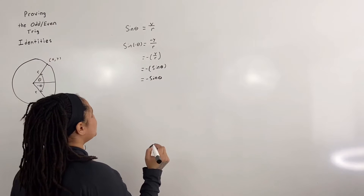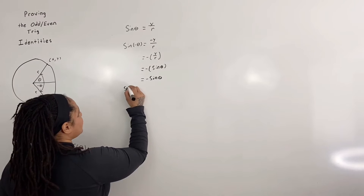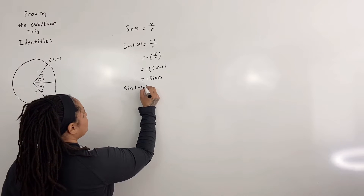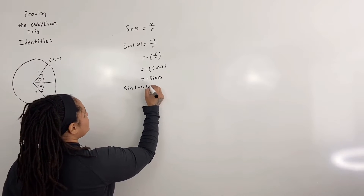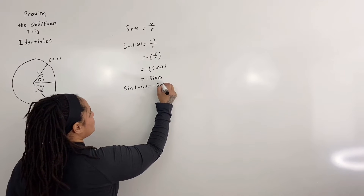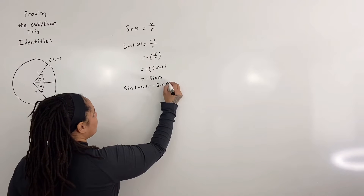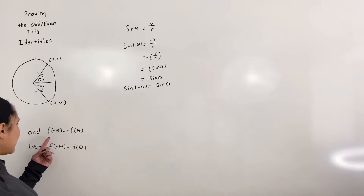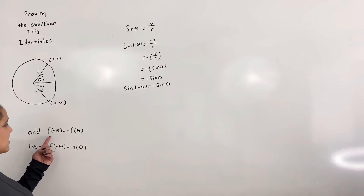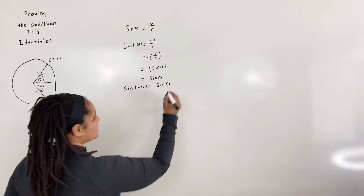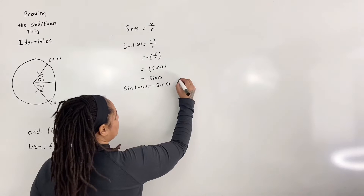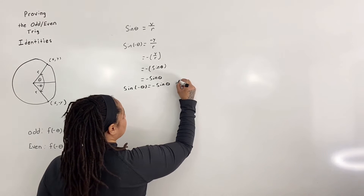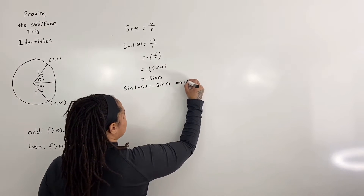So we see that sine of negative theta is equal to negative sine of theta, which means that by definition, sine is an odd function.